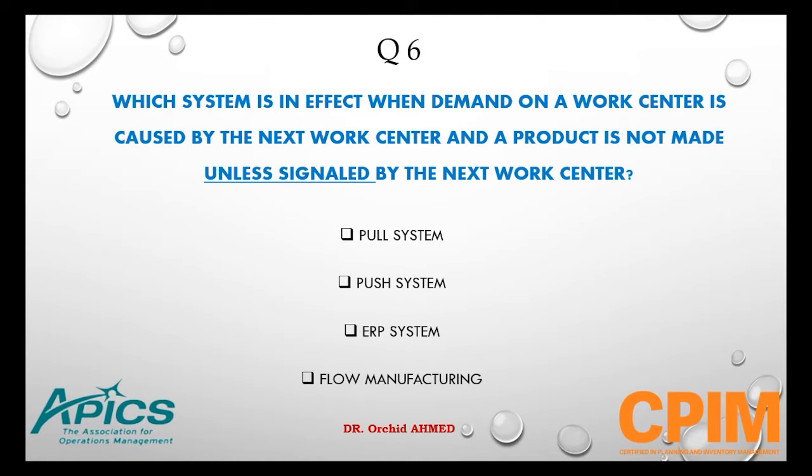Question number 6. Which system is in effect when demand on a work center is caused by the next work center and a product is not made unless signaled by the next work center? Options: pull system, push system, ERP system, or flow manufacturing.